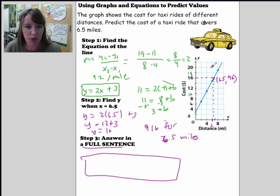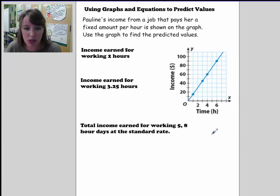So here we used an equation to find the predicted value. Here, let's go ahead and use the graph because this one's fairly easy. At least at 2, it's pretty easy. So income earned for 2 hours. For 2 hours here, we can just draw this line up here and then figure out the y value. So this would be $30. So it would be $30 for 2 hours.